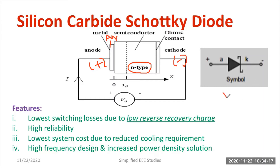As you can observe, this is the symbol of silicon carbide Schottky diode. It is similar to the symbol of a Schottky diode, but the material terminology is different. That is why it is called a silicon carbide Schottky diode. You can remember this symbol.